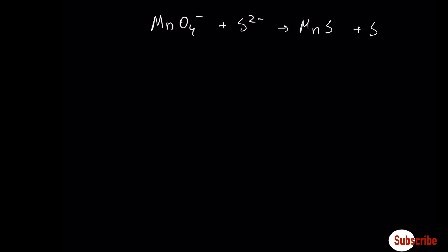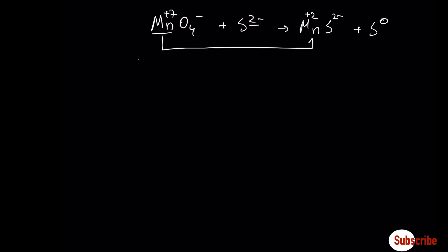We need to find the oxidation number for manganese. The oxidation number of Mn plus minus 2 for oxygen multiplied by 4 oxygens equals minus 1, so manganese is plus 7. Sulfide is minus 2, and sulfur in the product is 0. Manganese goes from plus 7 to plus 2 — it's reduced. Sulfur goes from minus 2 to 0 — it's oxidized.